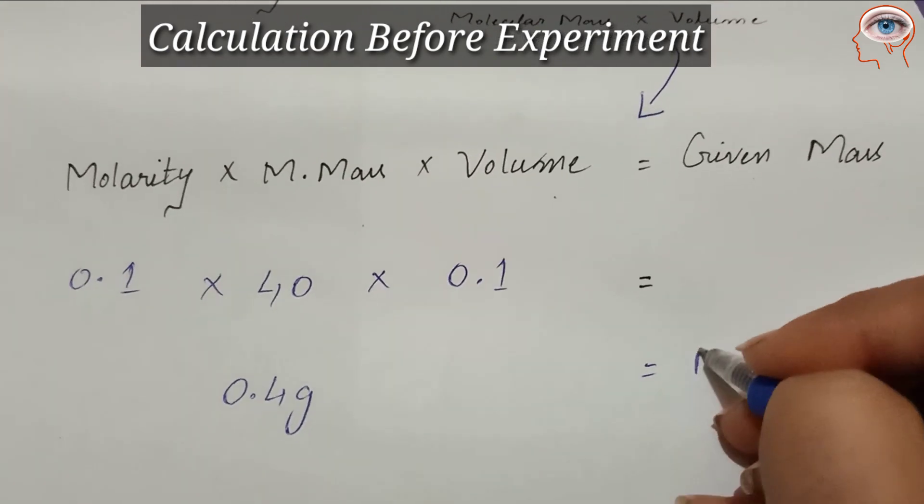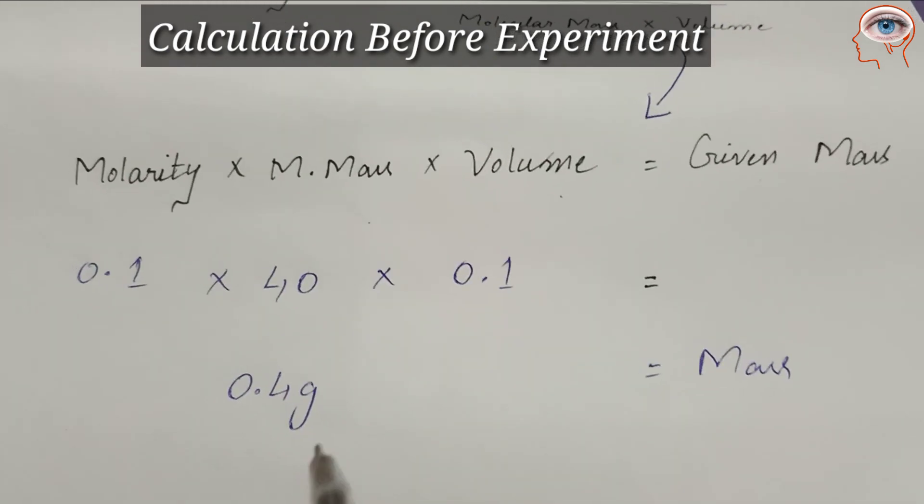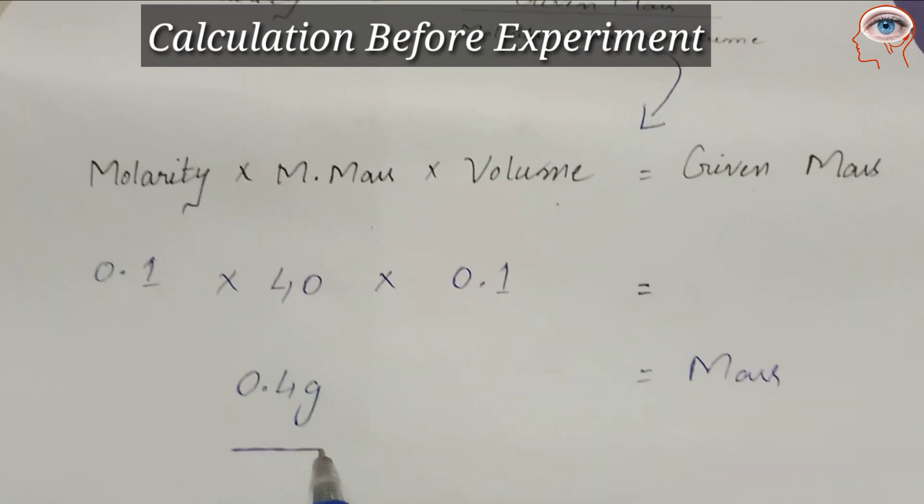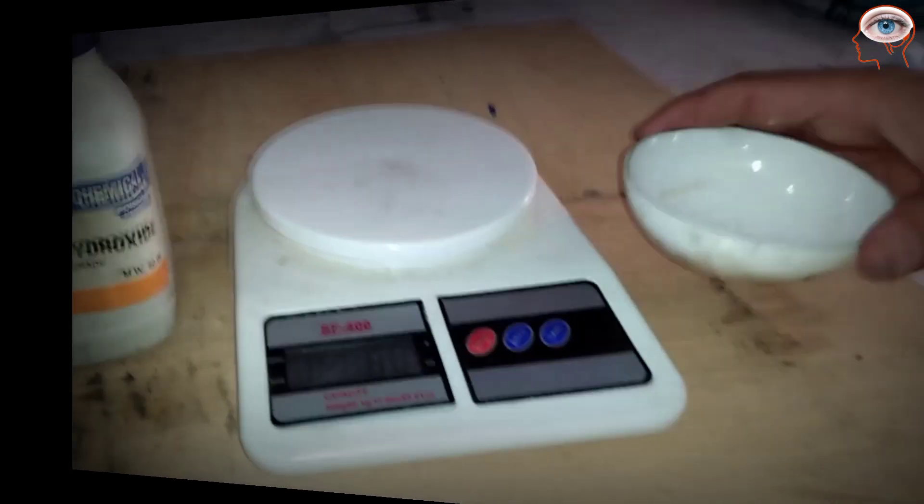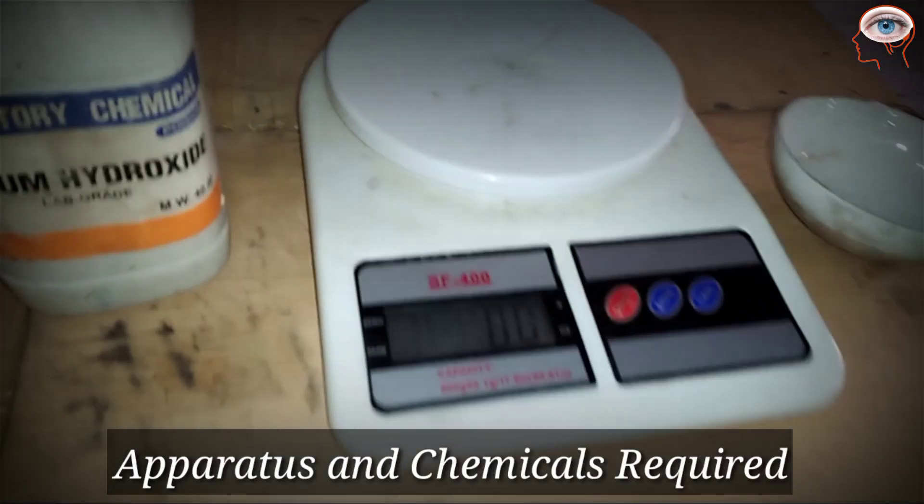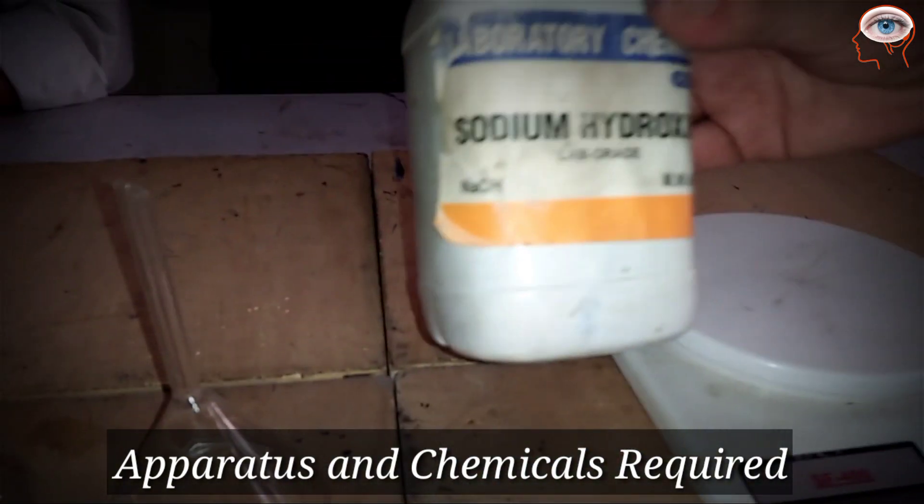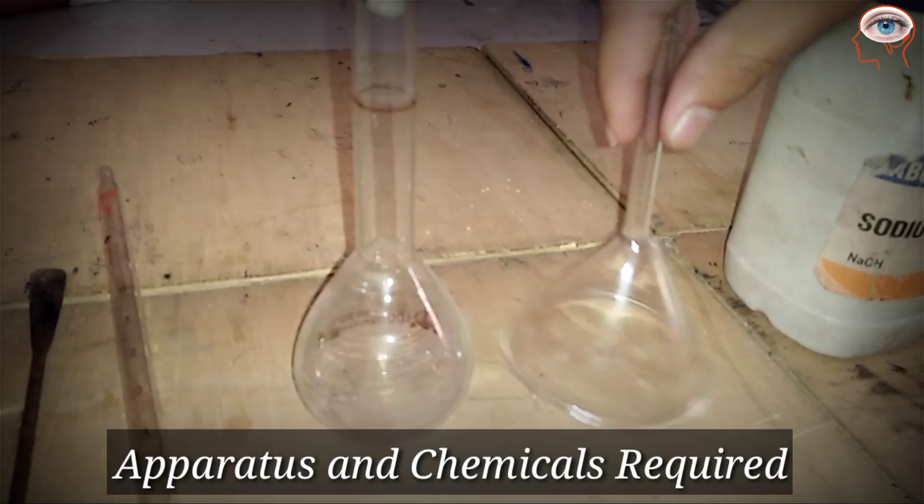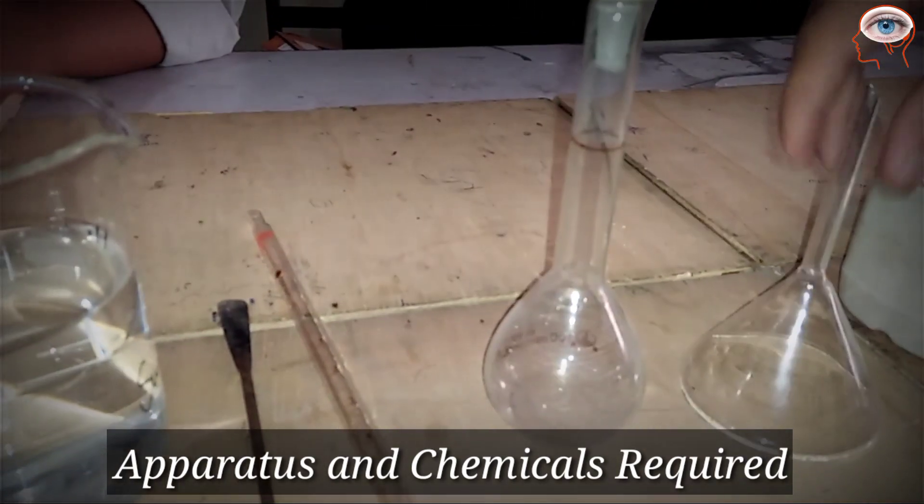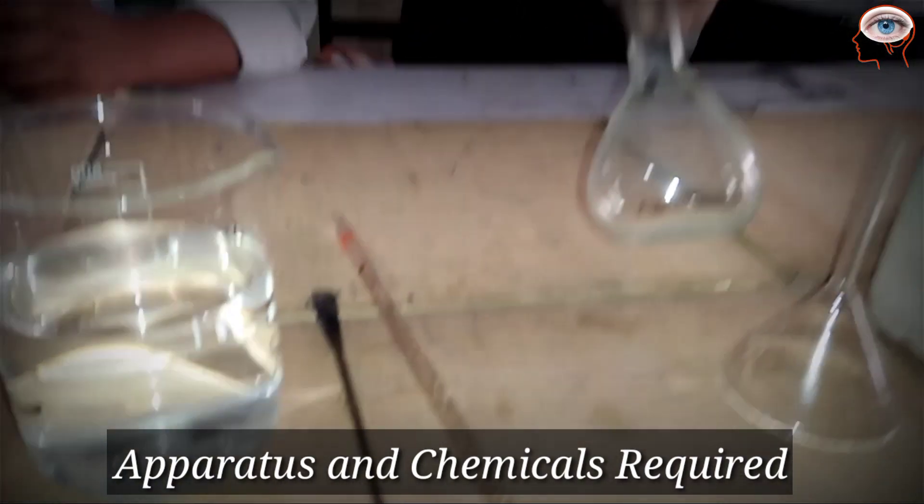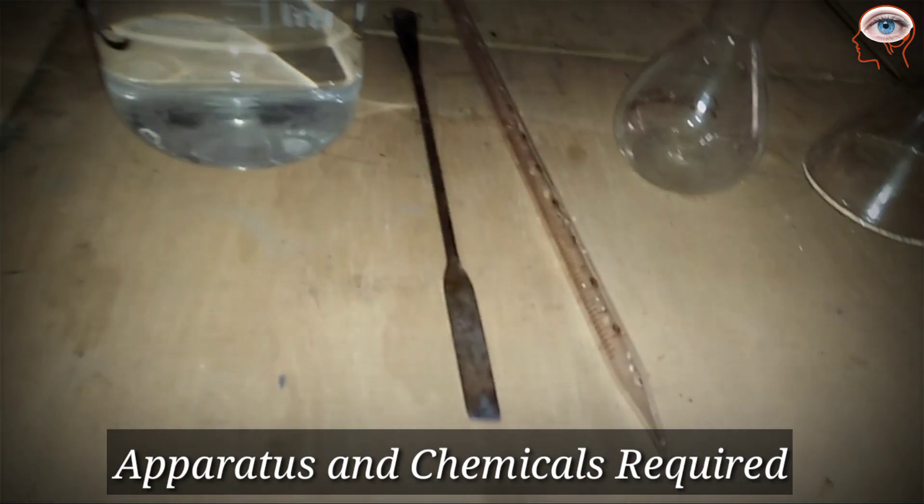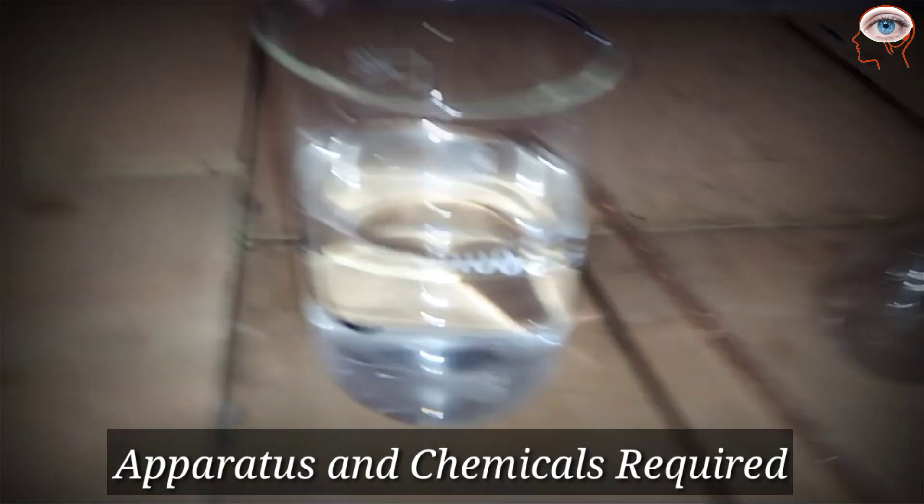Apparatus you need: china dish, electrical balance, solid sodium hydroxide, funnel, 100 ml measuring flask, pipette, spatula, and beaker with some water.